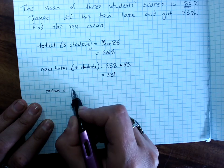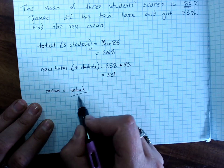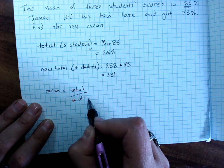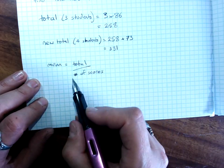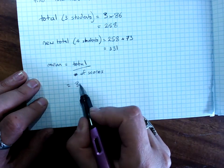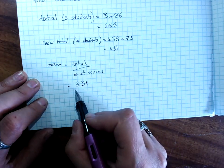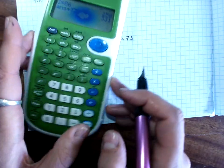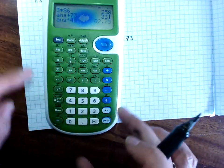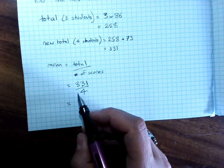And now, our average, the mean, is the total divided by the number of scores. That's 331. And remember, there were four students now. I've already got 331 in my calculator. Divide by four, 82.75.